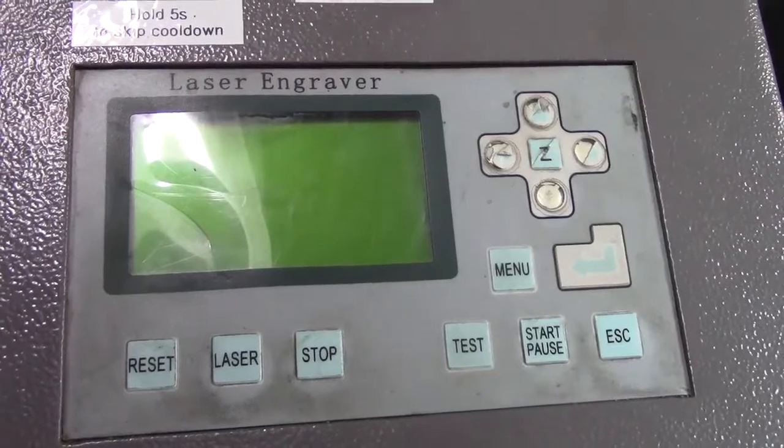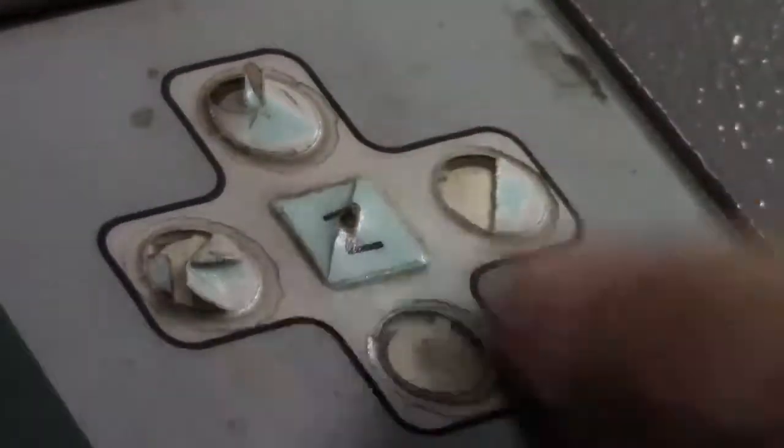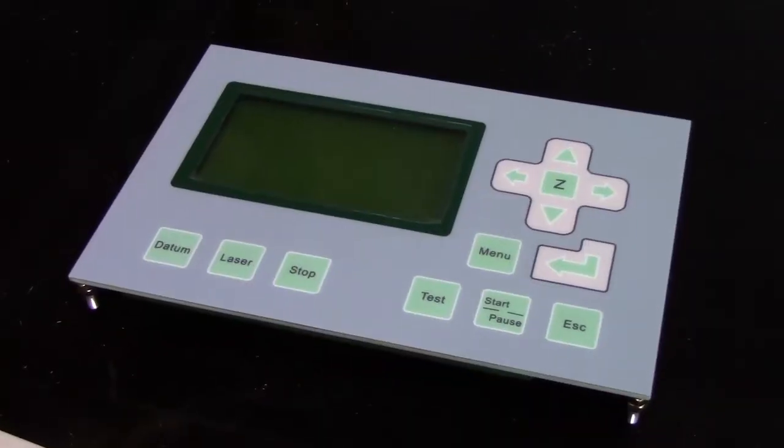Do you have a laser cutter with an old and busted LITRO MPC6515 control panel? Old and busted. These buttons are so worn out. Here's how to replace it with new hotness in just a few steps. New hotness.